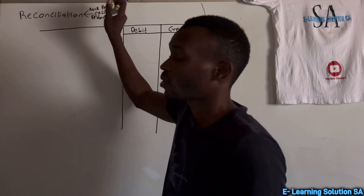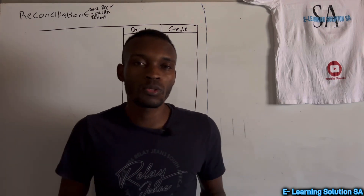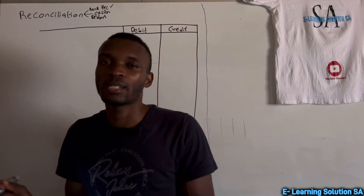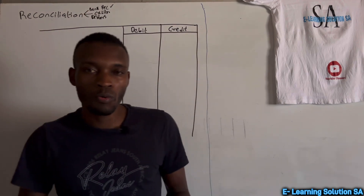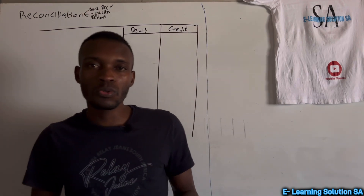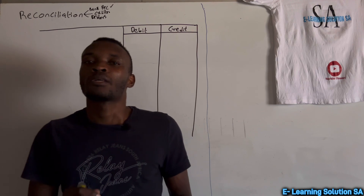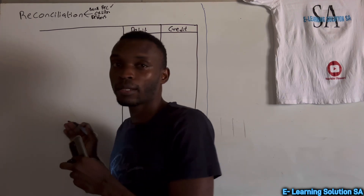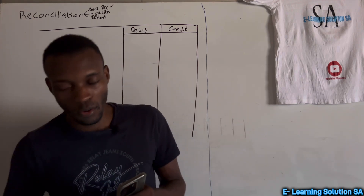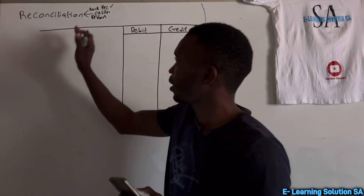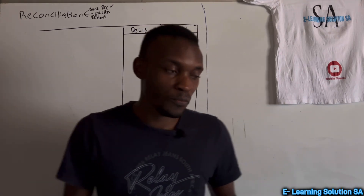For creditors reconciliation, we are comparing our books and the books of the creditors. For debtors reconciliation, we are comparing our books and the books of the debtors. All three of these statements must balance at the end.